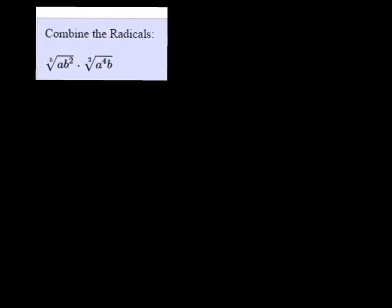All right, here we want to combine the radicals, but we see that one of them has an index of 5 and one of them has an index of 3, and the lowest common multiple of 5 and 3 is 15.